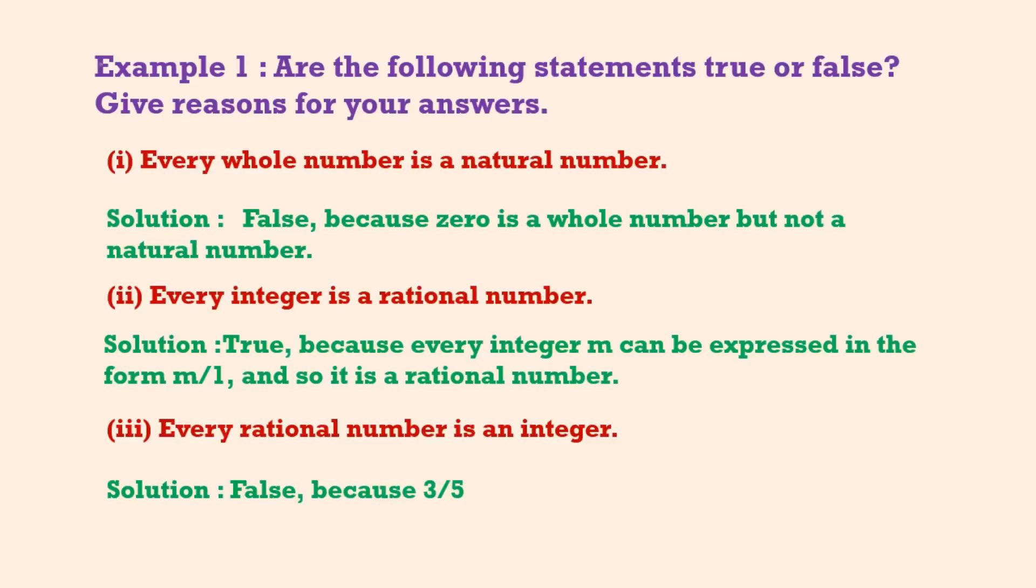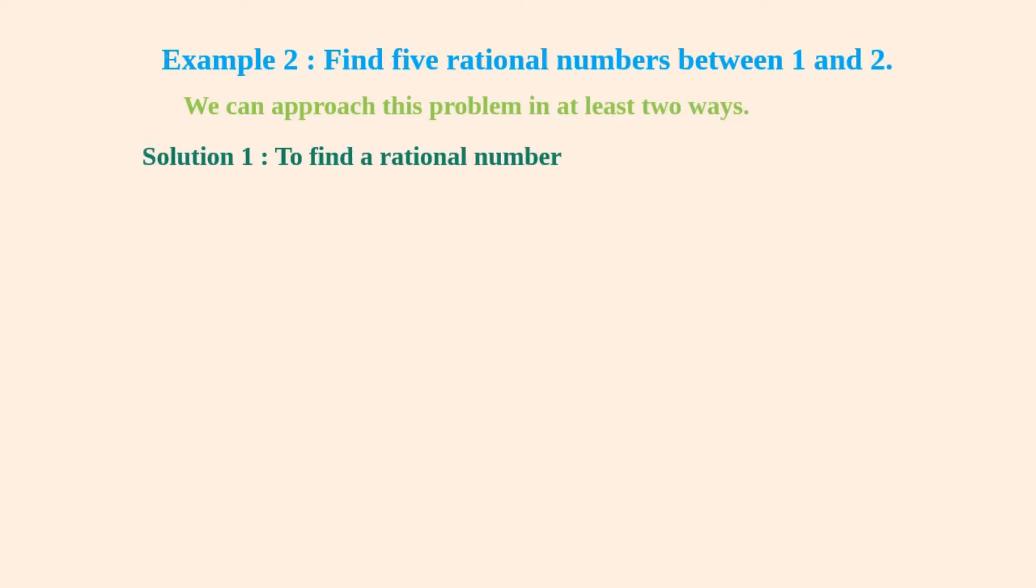Example 2: Find five rational numbers between 1 and 2. We can approach this problem in at least two ways. Solution 1: Recall that to find a rational number between r and s, you can add r and s and divide the sum by 2. That is, (r + s)/2 lies between r and s.